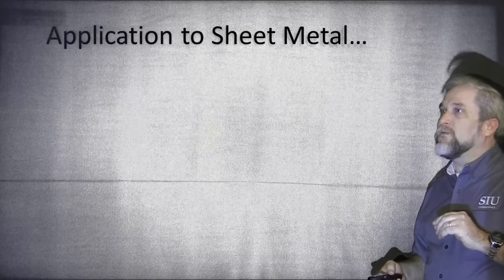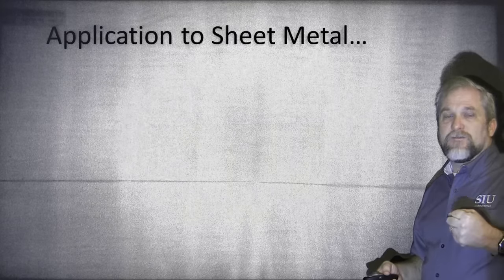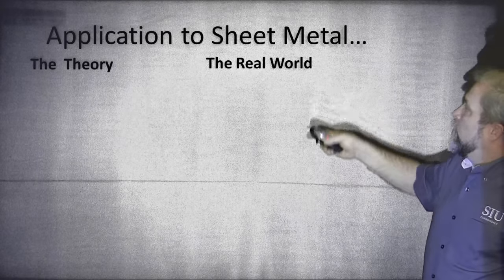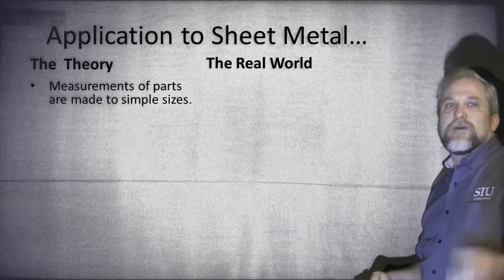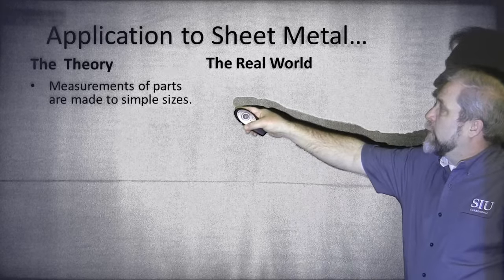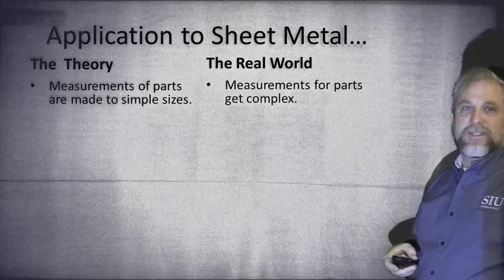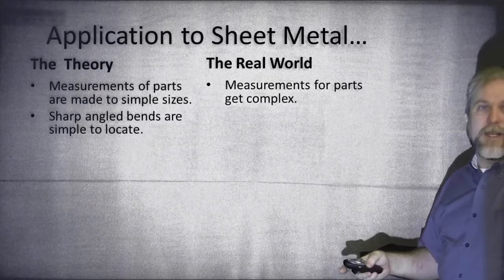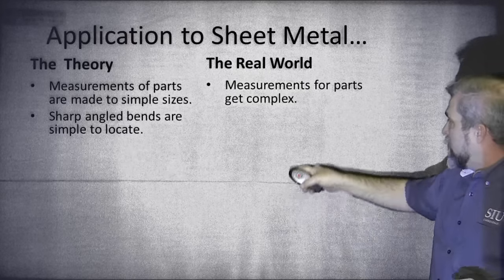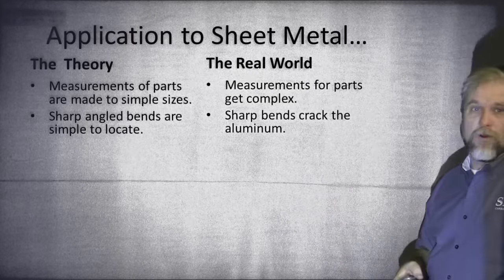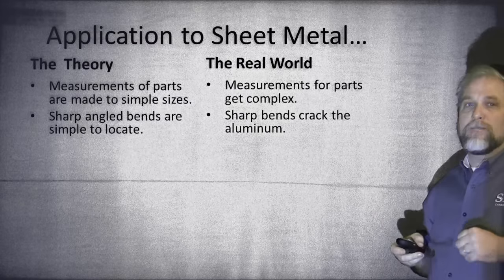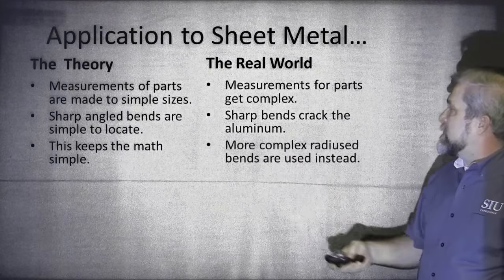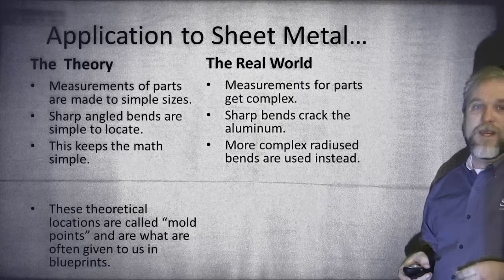Unfortunately, or perhaps fortunately, when we get to sheet metal, some of those differences can be bad for us, but some can be good for us. In theory, the measurements to parts that we're going to form on the brake are made to nice, simple sizes. But in the real world, things become quite complex. In theory, there are sharp angled bends that make it simple to locate the corners. But in the real world, we have to go around a corner because a sharp angle would crack the aluminum. So our theoretical math is nice and simple, but our real world math is complex because of the radius.